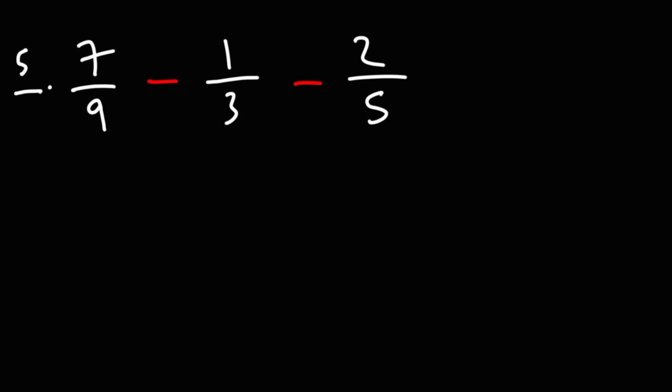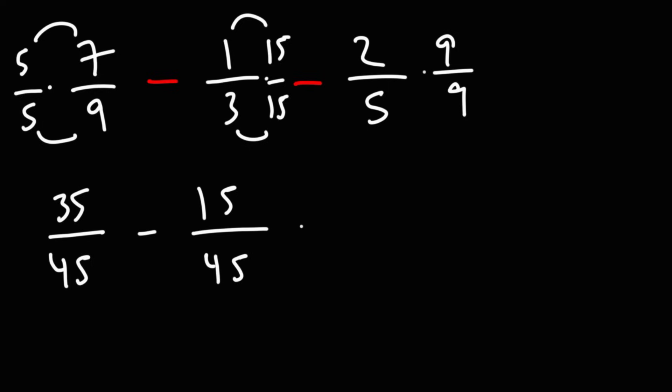To do that, I need to multiply this by 5, this by 9, and this one by 15. 5 times 9 on the bottom here is 45. 5 times 7 is 35. 1 times 15 is 15. 3 times 15 is 45. 2 times 9 is 18. 5 times 9 is 45.